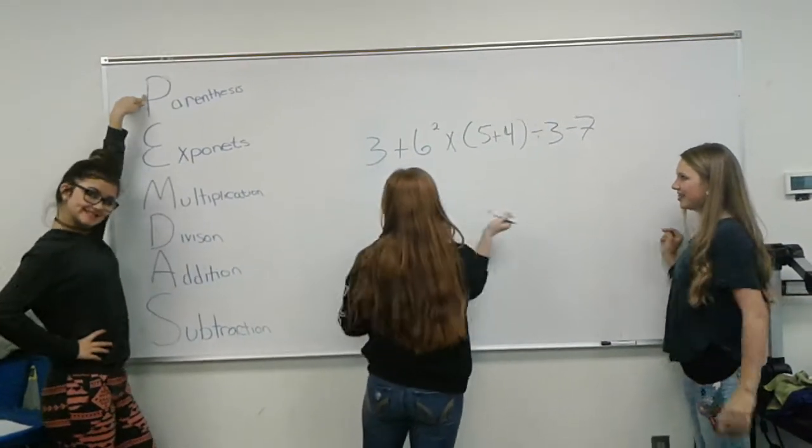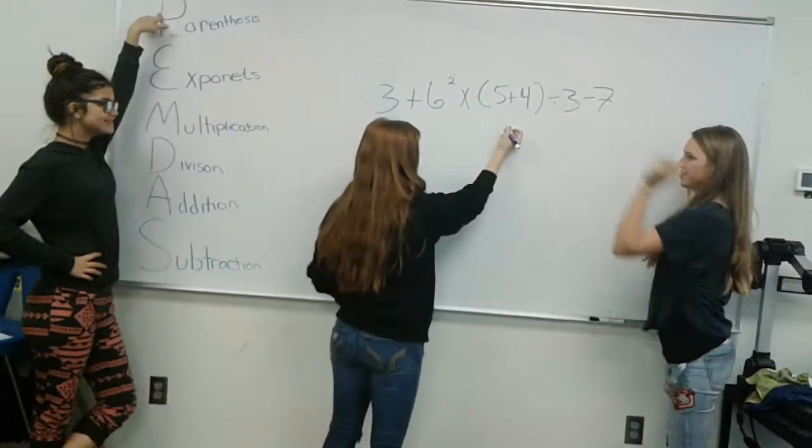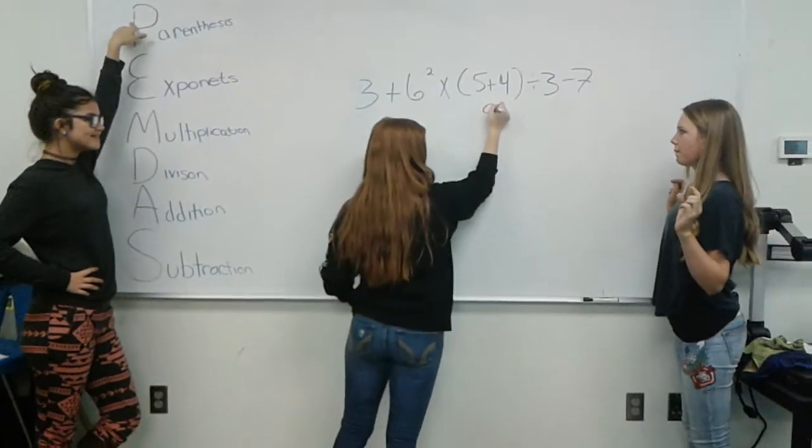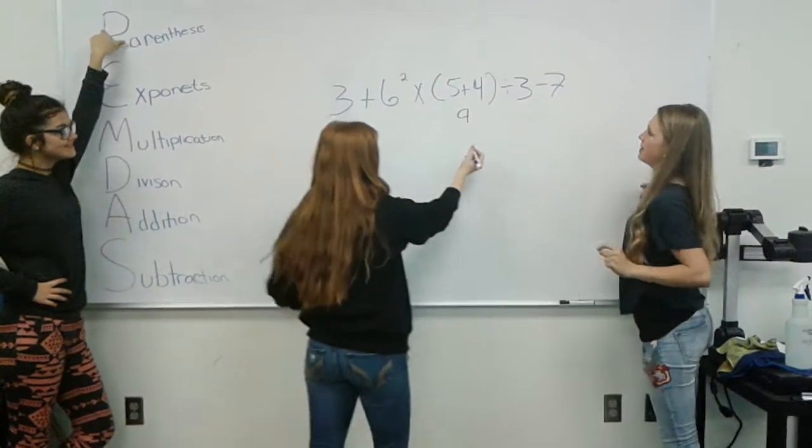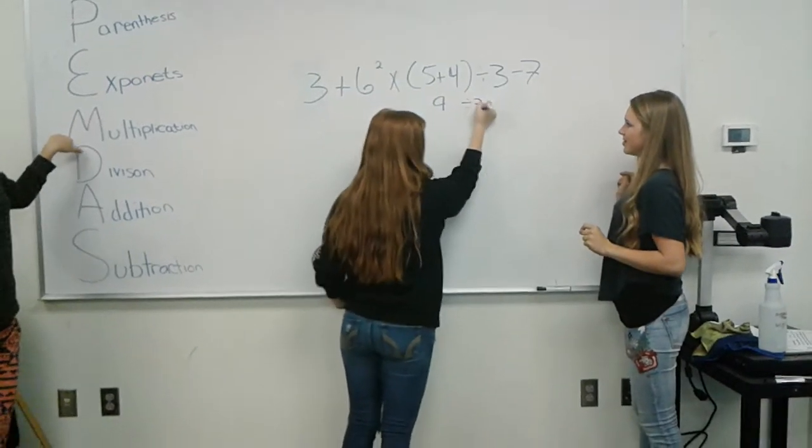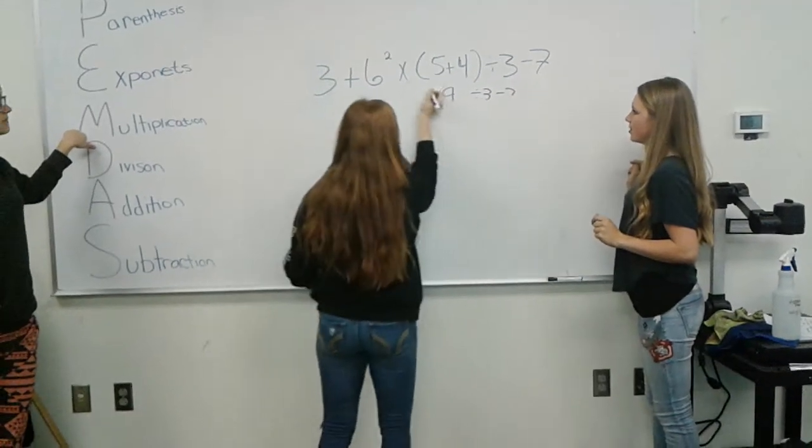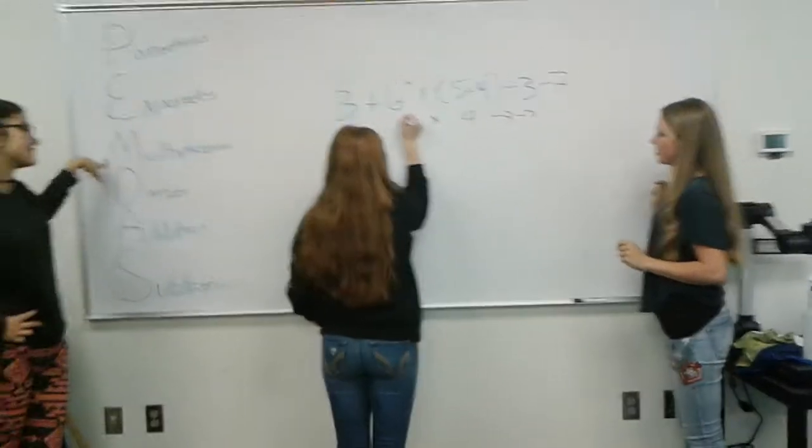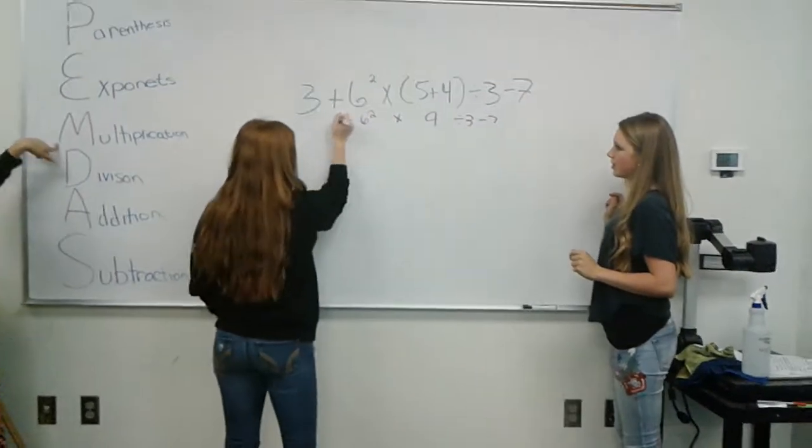First, that would be 9 plus 9, would be 9 times 3 minus 7. No, divide by 3 minus 7. Just go ahead and bring this down. 6 to the 2 plus 3.